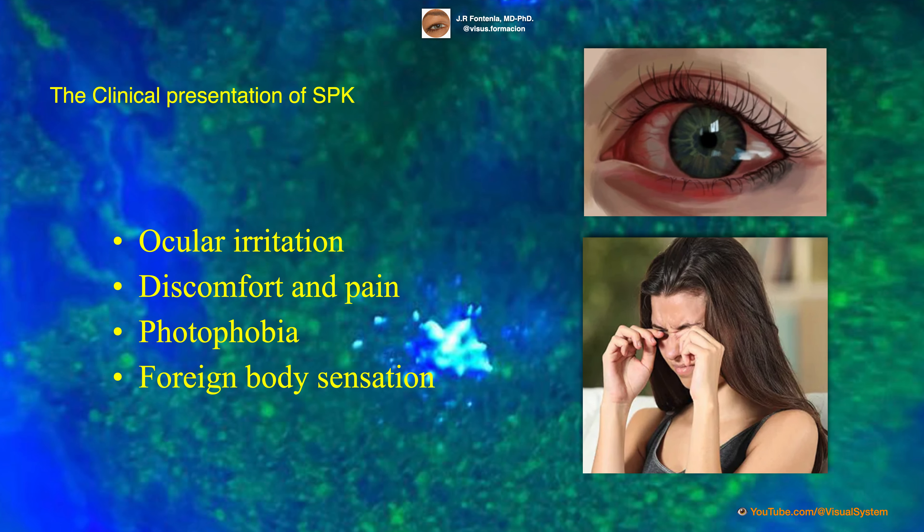The clinical presentation of superficial punctate keratitis includes symptoms such as ocular irritation, discomfort and pain, photophobia, and foreign body sensation.